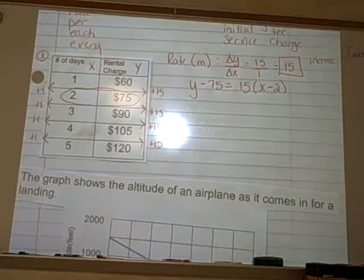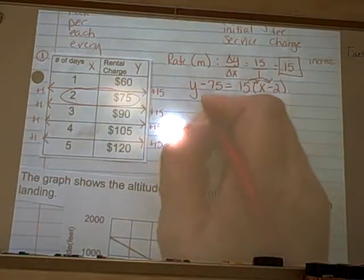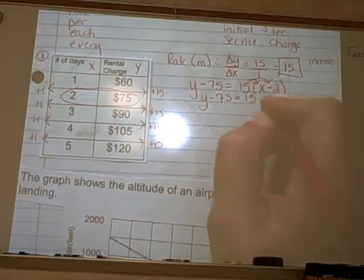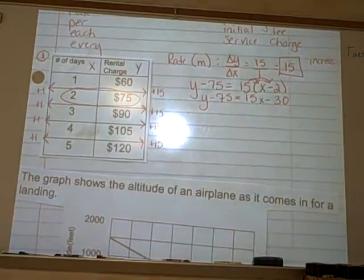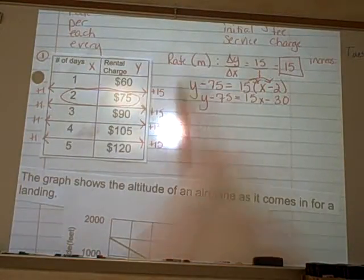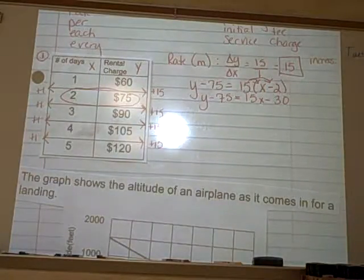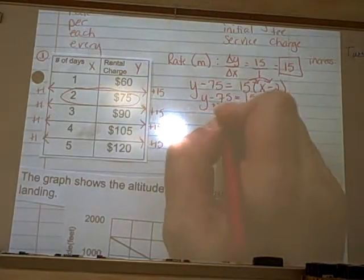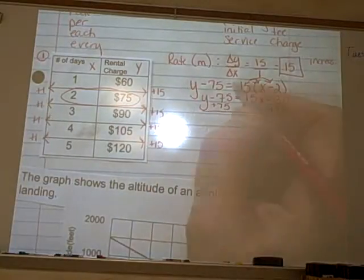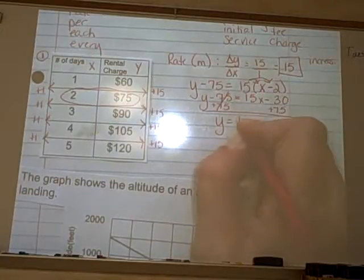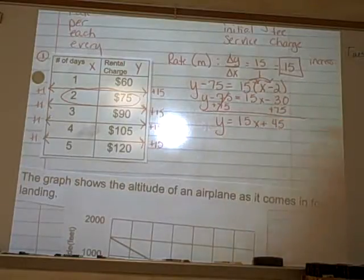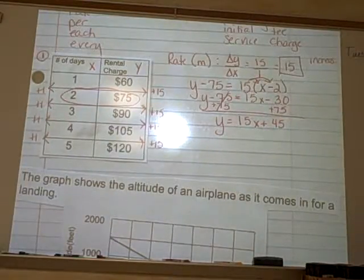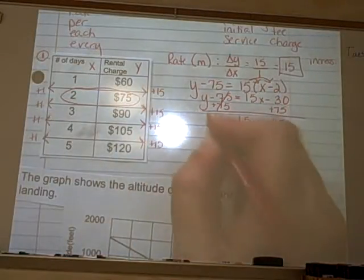To get it into slope-intercept form, we distribute the 15. So y minus 75 equals 15x minus 30, because 15 times 2 is 30. Then I need to move the 75 — add 75 to both sides. So I get y equals 15x plus 45. That's my y equals mx plus b equation. m is 15, b is 45.